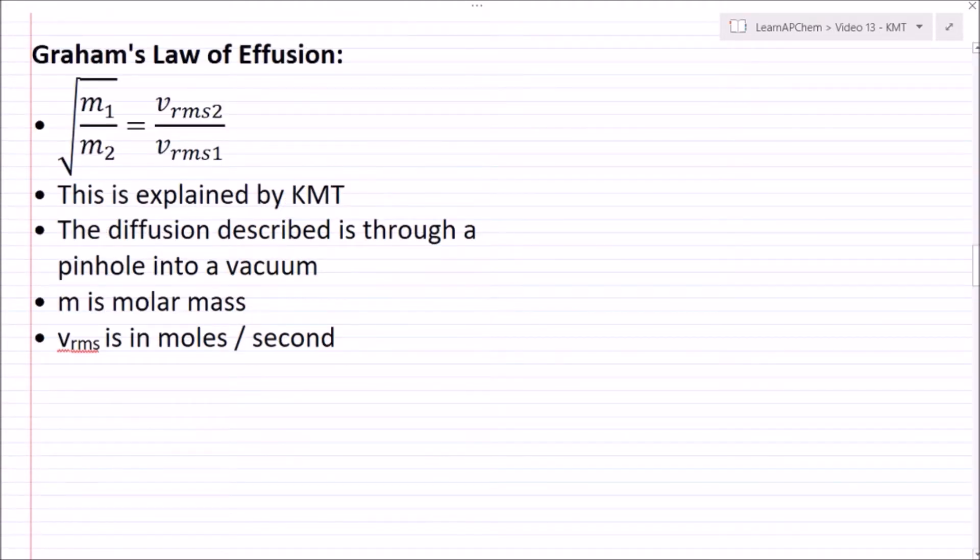Alright, so tying into kinetic molecular theory is Graham's law of effusion, and this says that the square root of m1 over m2 is equal to the velocity of the second one over the velocity of the first. This is explained by KMT, so if you don't understand that, rewind and make sure you understand the five postulates.